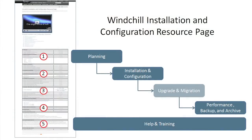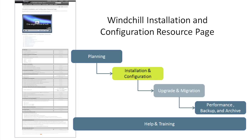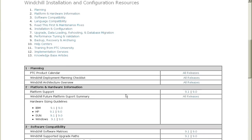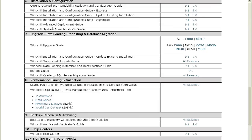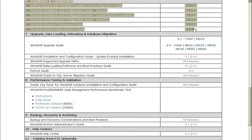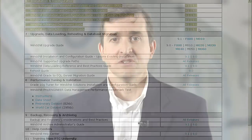You can think of the page as containing five different categories of information. Of course you'll find information about installation and configuration — the guides that you'll need for doing that part of the process. But you'll also find information to help you plan the installation of your system.